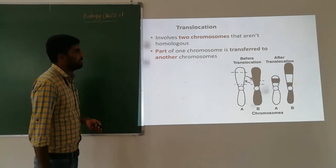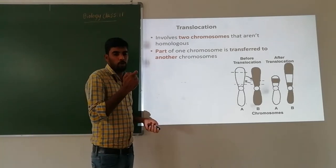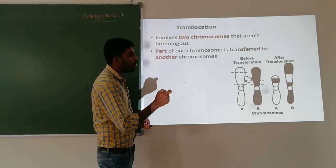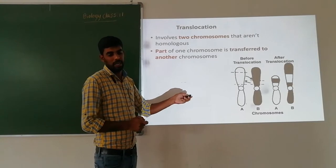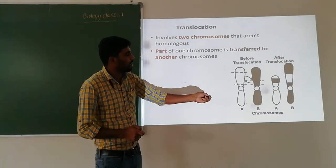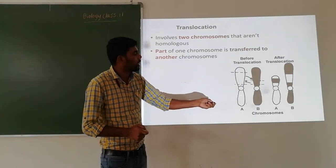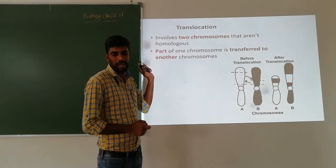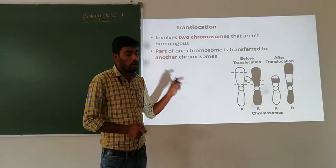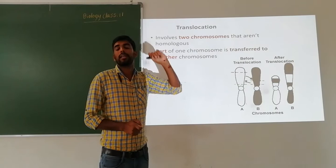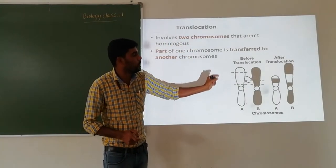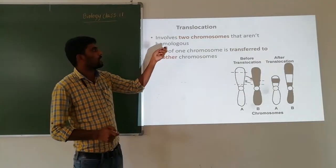Translocation involves two chromosomes. It means the exchange of chromatin segments between two non-homologous chromosomes. Different chromosomes exchange segments. Exchange of segments between homologous chromosomes is recombination; exchange of segments between non-homologous chromosomes is translocation — and that is a mutation.